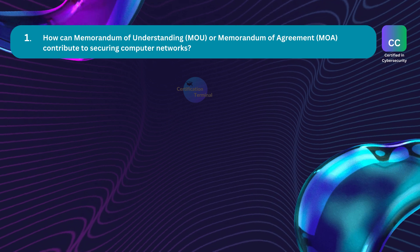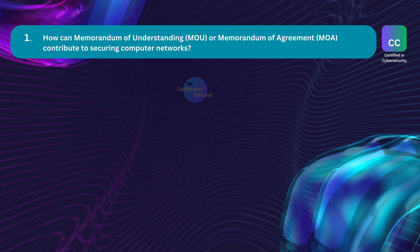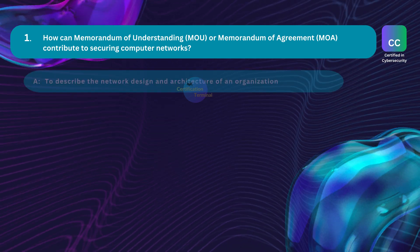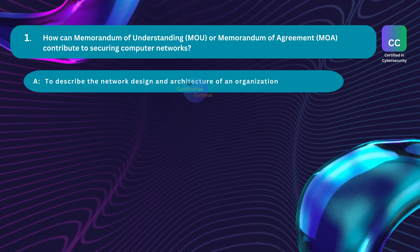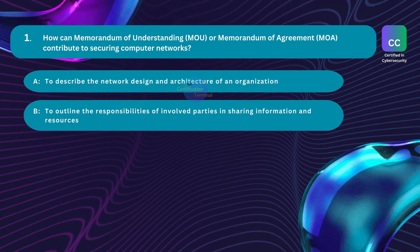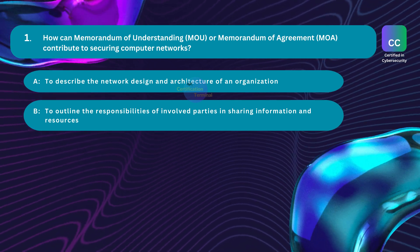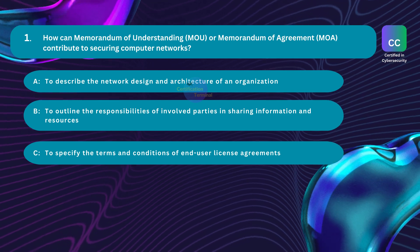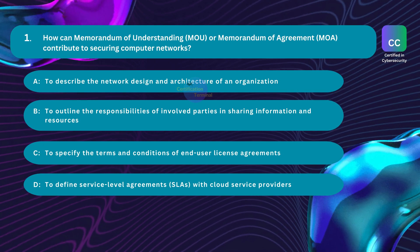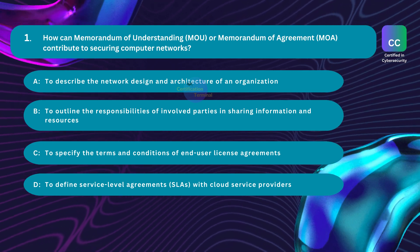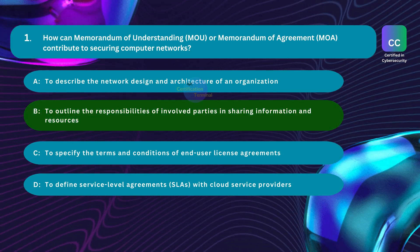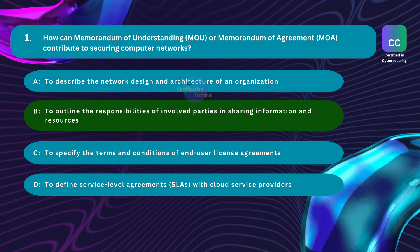Question number one. How can Memorandum of Understanding or Memorandum of Agreement contribute to securing computer networks? Option A: to describe the network design and architecture of an organization. Option B: to outline the responsibilities of involved parties in sharing information and resources. Option C: to specify the terms and conditions of end-user license agreements. Option D: to define service-level agreements (SLAs) with cloud service providers. The correct answer is Option B: to outline the responsibilities of involved parties in sharing information and resources.